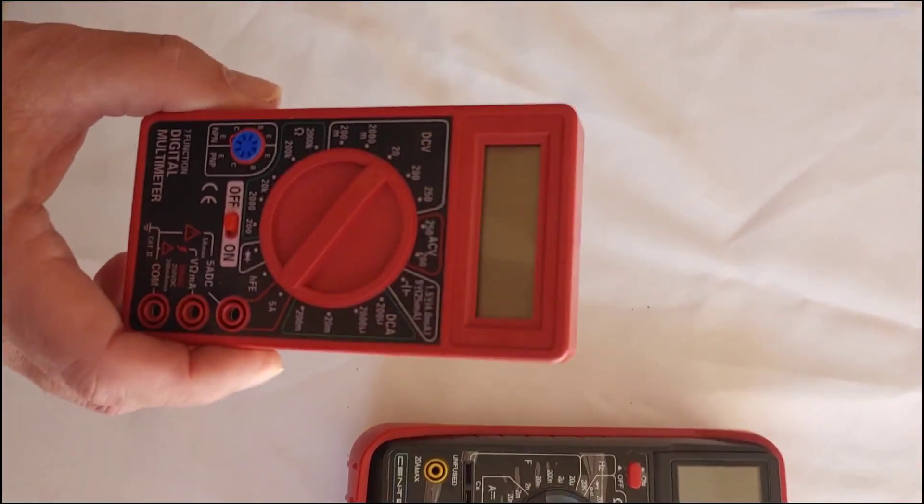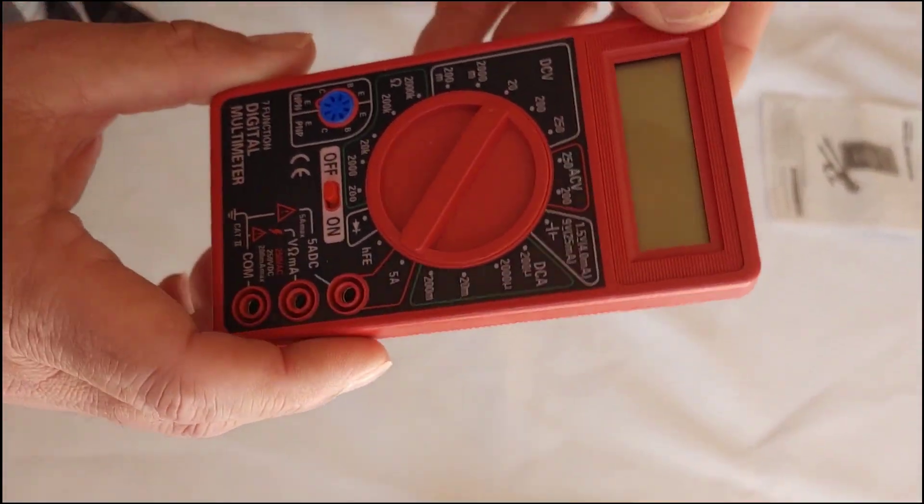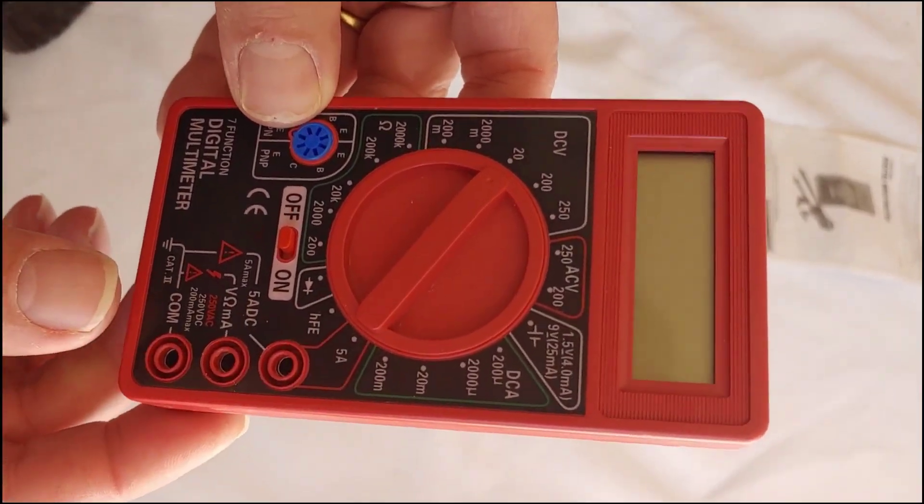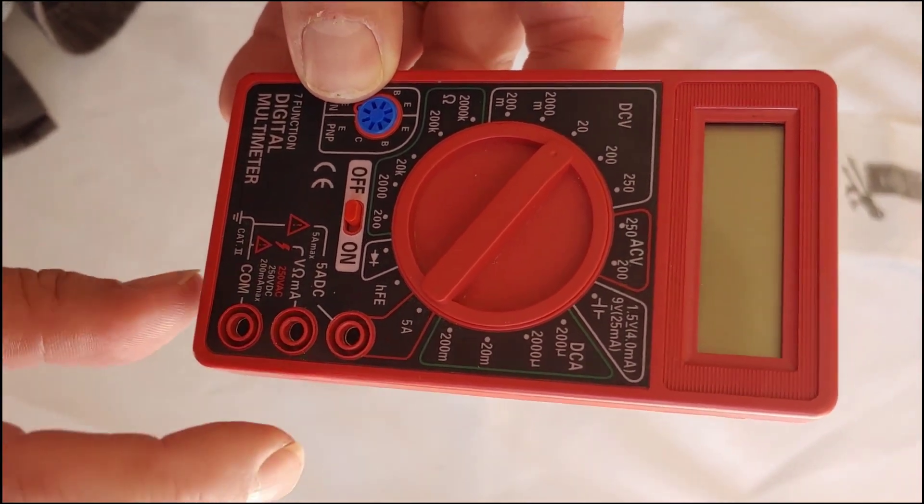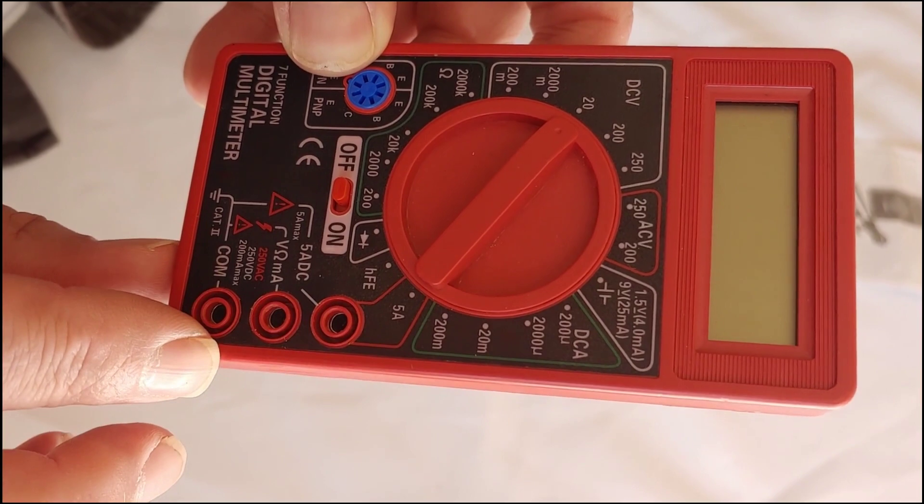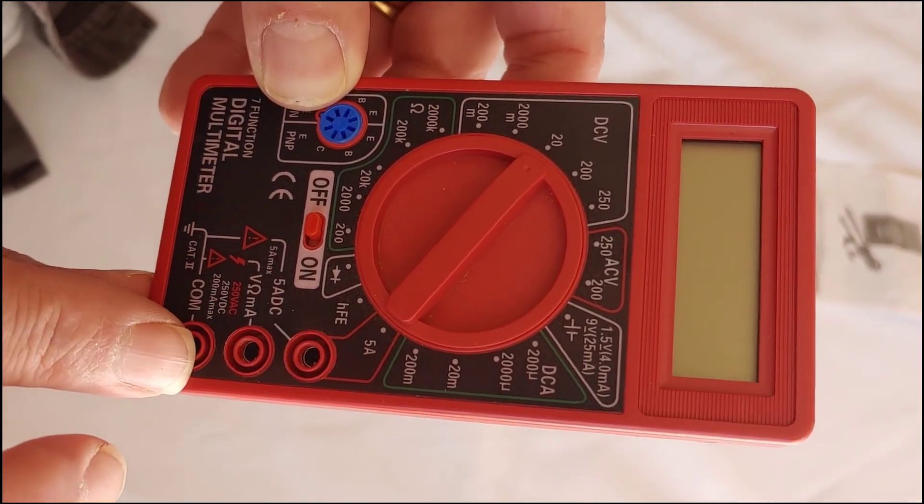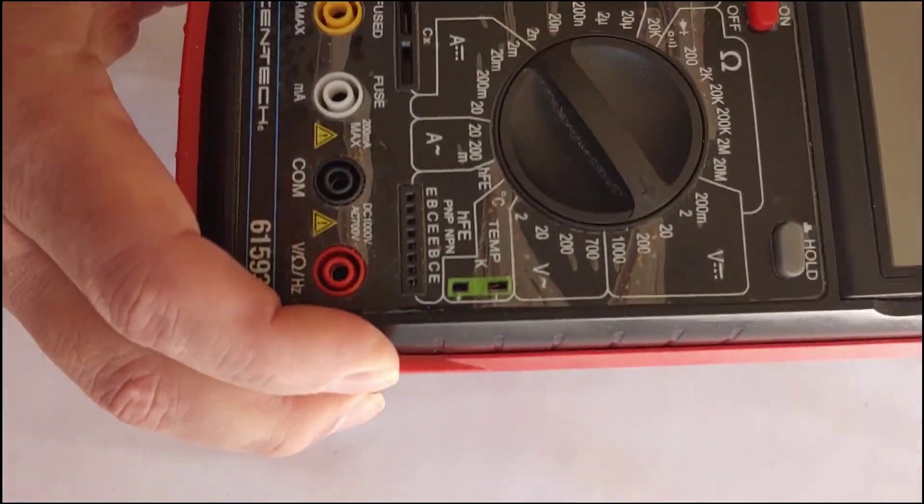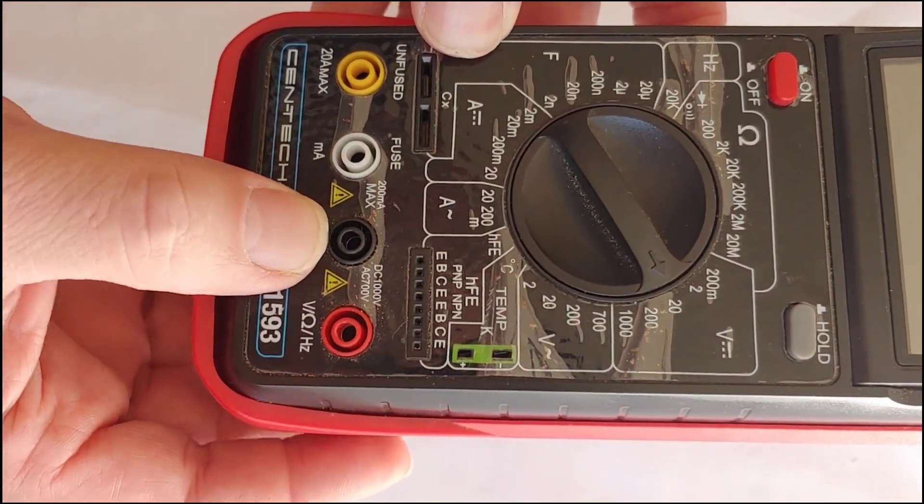Let's talk about some of the functions of the multimeter. First, we're going to talk about where to plug the leads in. Down here you can see where to plug those in. On this one, you can see they're all red. On this other one I have over here, you can see there's a red and the black.